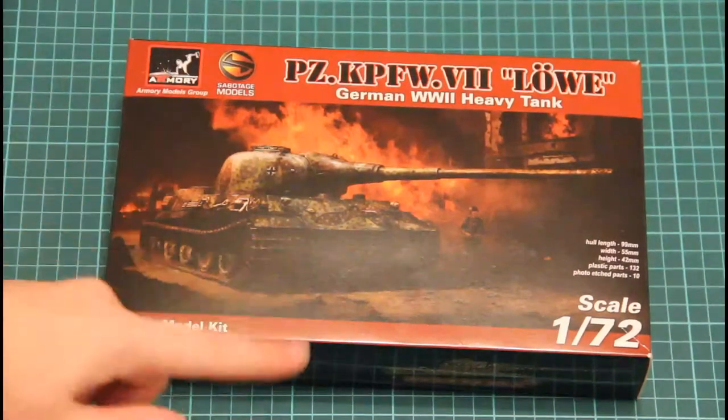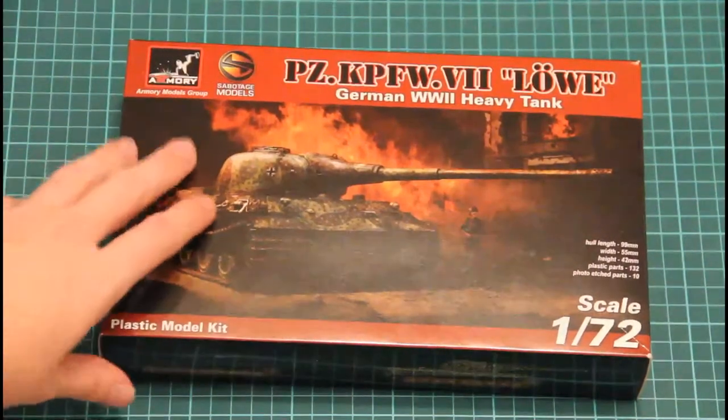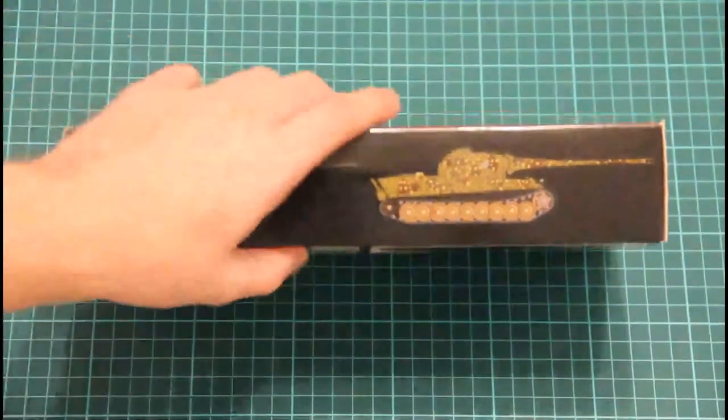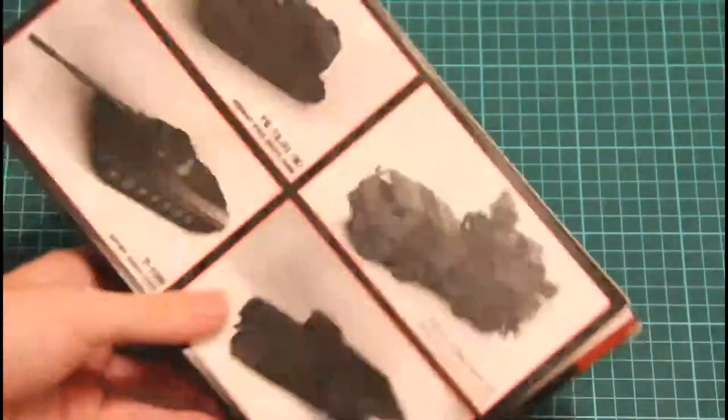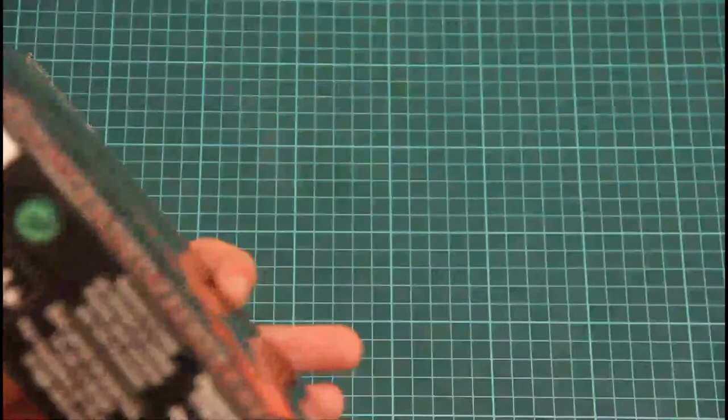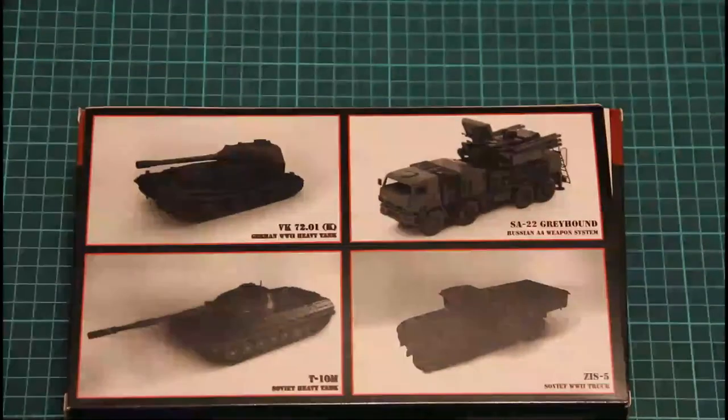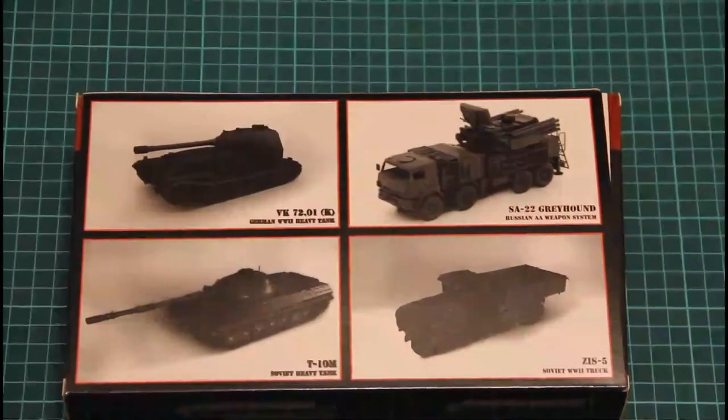On the front part we have this nice box art. On the sides we have two marking options which are available in this kit, then we have some safety information and information about the manufacturer. And also we have here some other models from the same manufacturer.